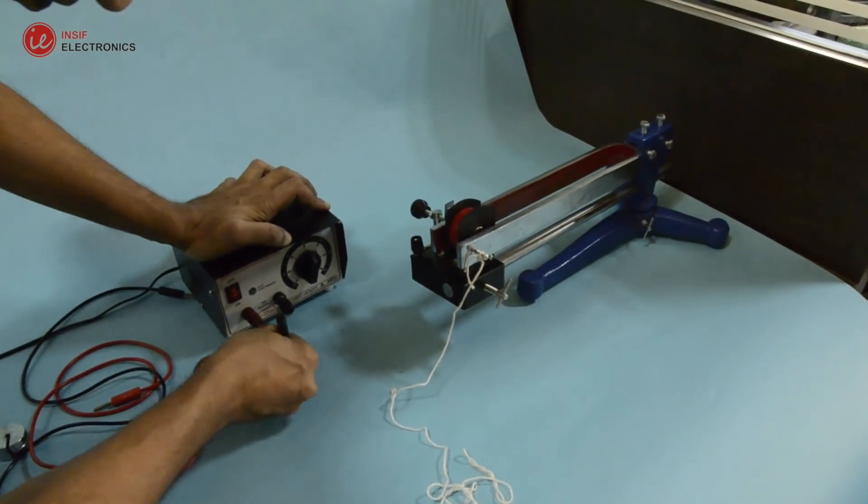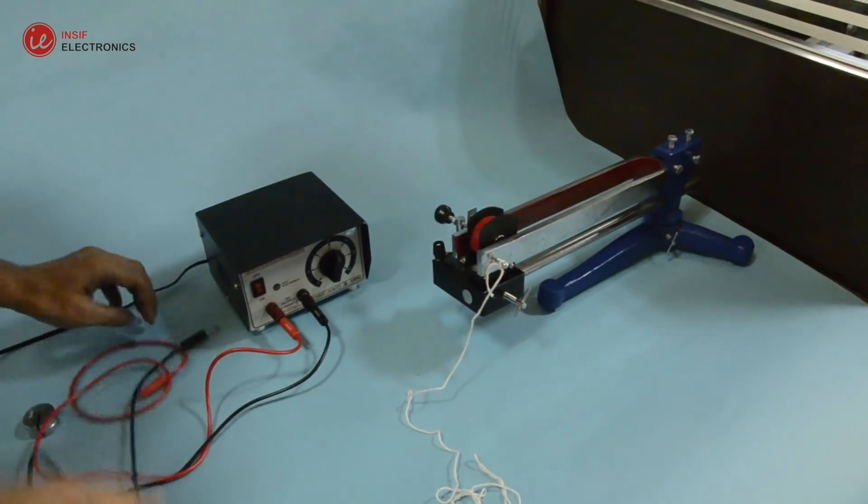Take the connecting wires and connect it with battery eliminator and set it to 6 volts.